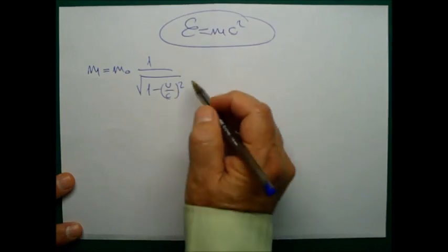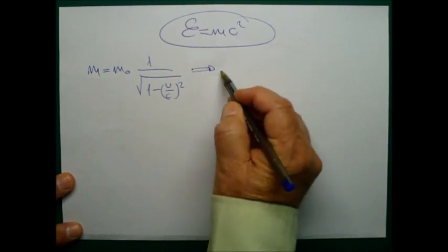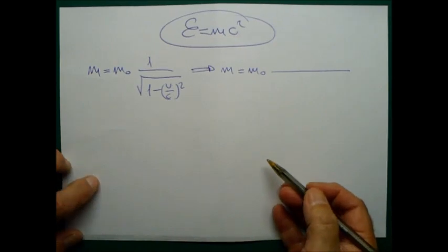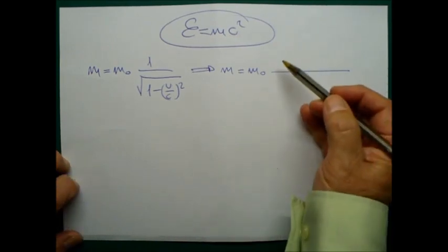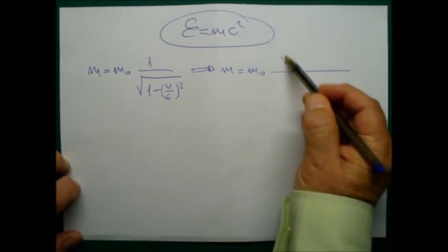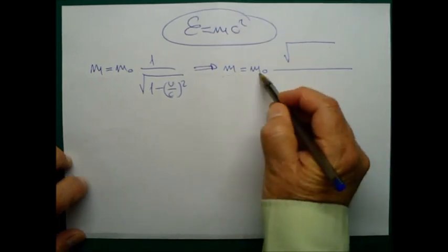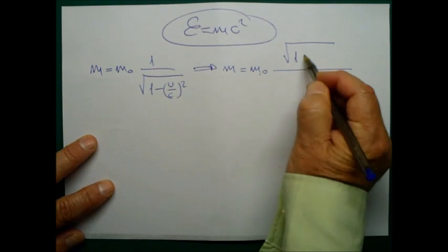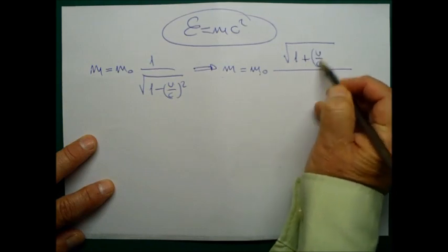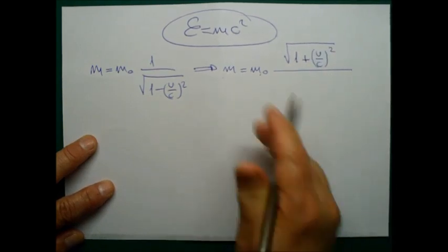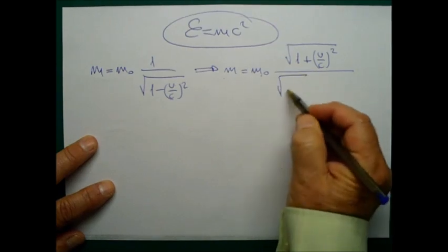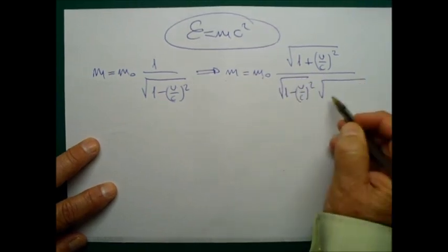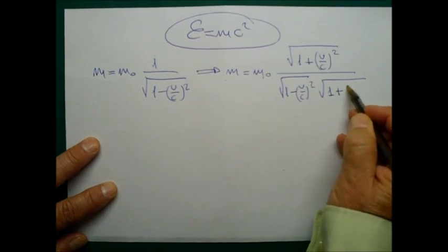What I do here is to multiply both the numerator and the denominator with the same root with a plus inside. That is, M equals M₀ times square root of 1 plus V over C squared, over square root of 1 minus V over C squared times the square root of 1 plus V over C squared.